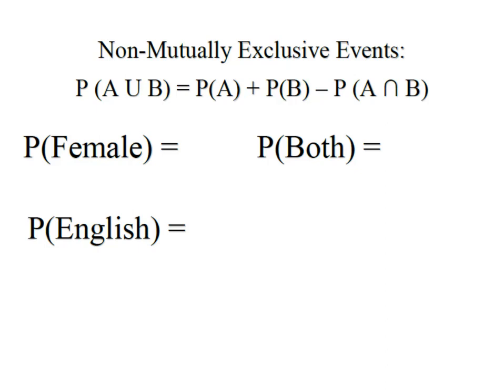We knew we had non-mutually exclusive events because we had females in the English and females in the French. So we had a total of three out of nine who were female.